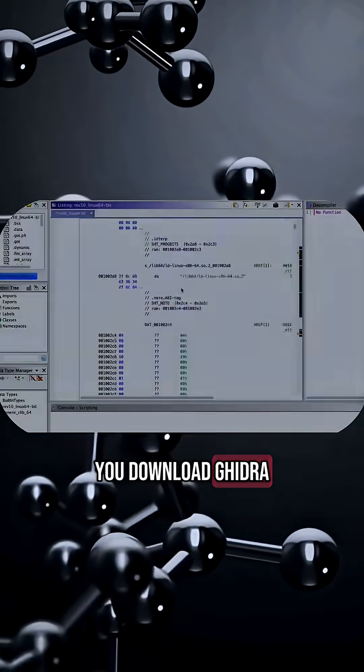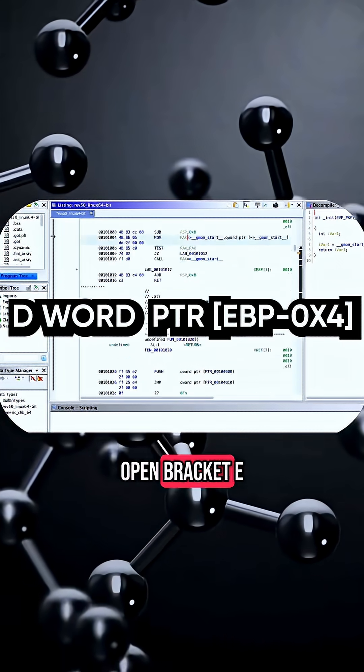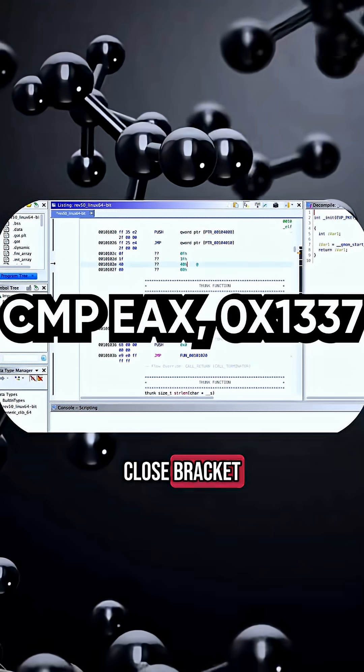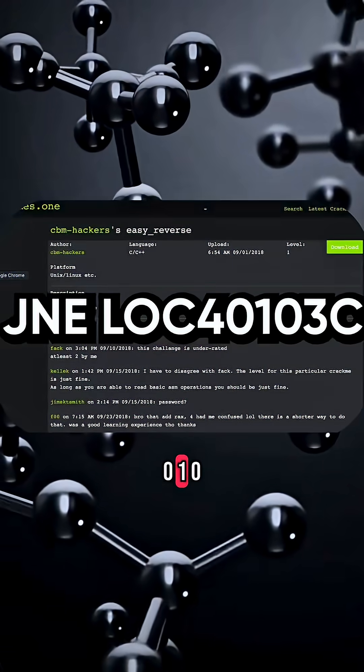So you download Ghidra, fire up a random crack me, and the second it loads, you're greeted with lines like move EAX, dword, pointer, open bracket, EBP-0X4, close bracket. Then compare EAX with 0X1337, and jump not equal to location 40103C,